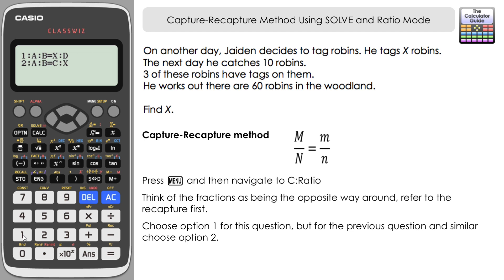Now on the left-hand side here we're going to input the number tagged from the recapture and the total number that were recaptured. So that's 3 and 10. On the right-hand side, we've got an unknown x and our estimate of the population, 60. So let's fill in what we know: 3 and 10. It automatically just scrolls across for you, so that is the convenience of using ratio mode. And then 60. If you press equals, then that's resolved the unknown there, so for x that is 18.